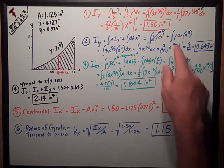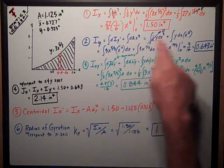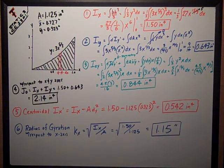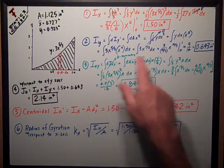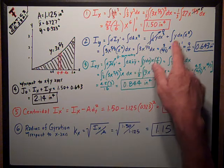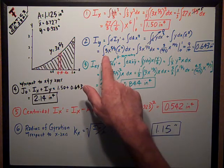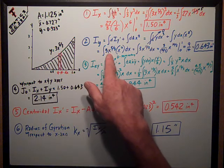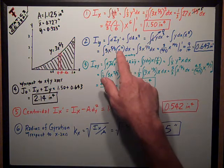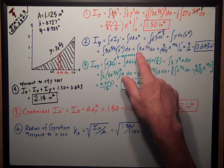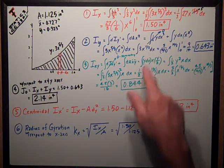And we have the integral of dA, which is y dx, times x squared. Rearranging that and substituting in this formula for y, we get integral of 3x to the 5 thirds, that's y, times x squared, dx. Combining the x terms, we get 3x to the 11 thirds power, dx.